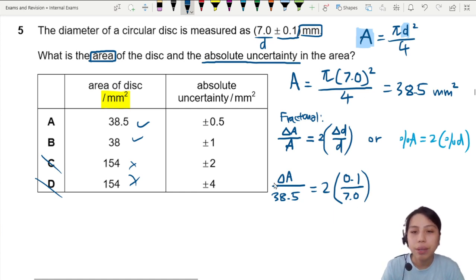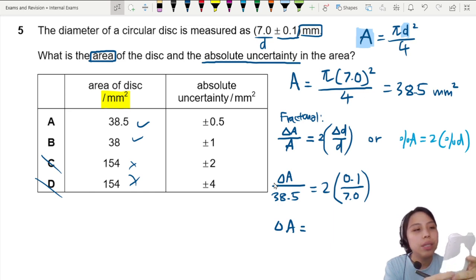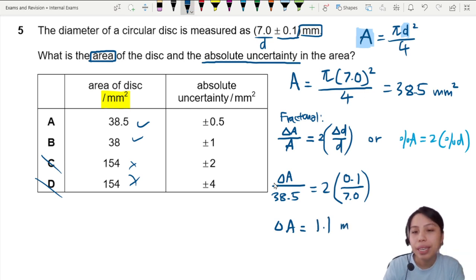Okay, calculator time what we get for delta A. This will be 2 times 0.1 over 7 times 38.5. 1.1 millimeter square. And this is plus minus uncertainty.